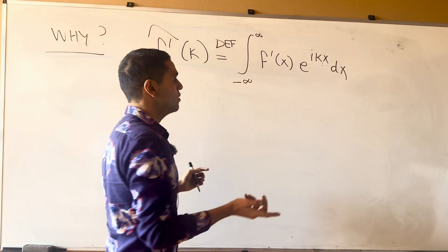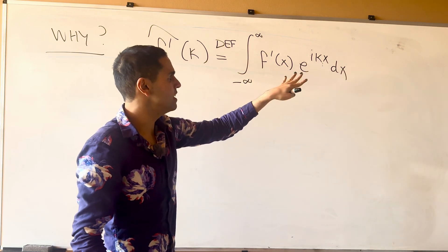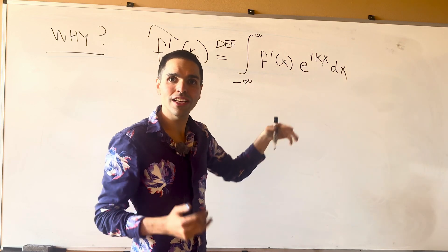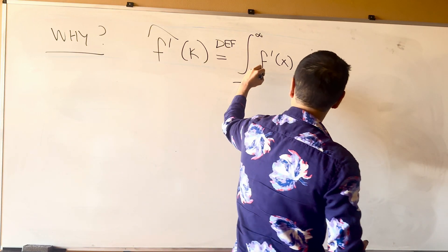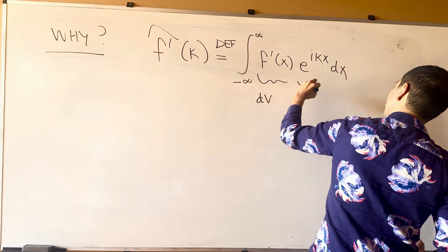Well, we have the product of two functions, one that can be integrated easily, the other one being differentiated easily. So let's just use an integration by parts. So this is like dv, and this is u.